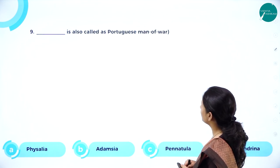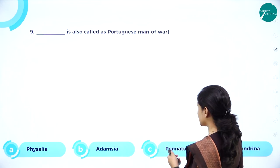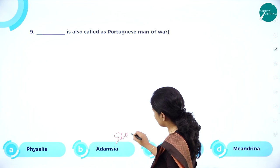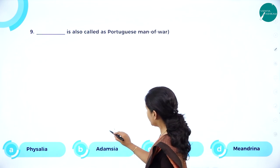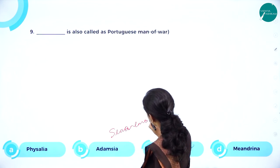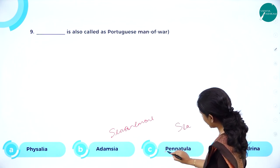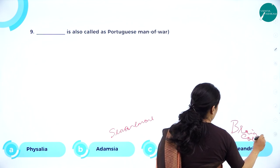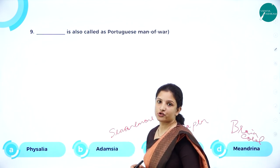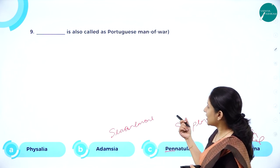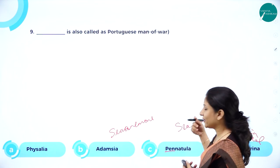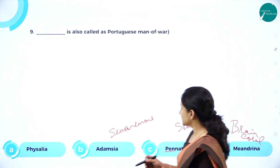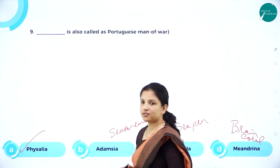Ninth MCQ: dash is also called Portuguese man of war. Is it Physalia, adamsia, pennatula, or meandrina? Adamsia is sea anemone; pennatula is sea pen; meandrina is brain coral. Physalia is the Portuguese man of war, so the answer is Physalia. Similarly, questions can be framed as: dash is called sea anemone (adamsia), dash is called sea pen (pennatula), dash is called brain coral (meandrina) — you should learn all these common names.